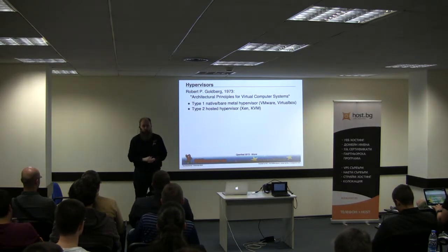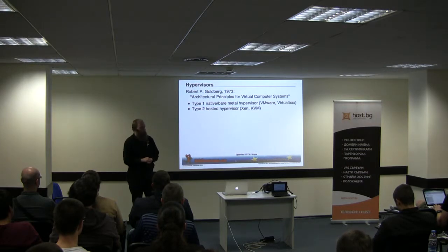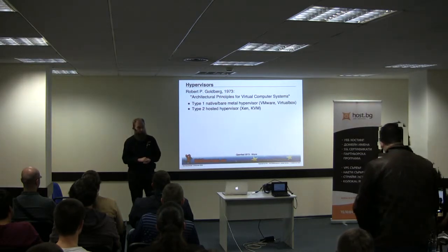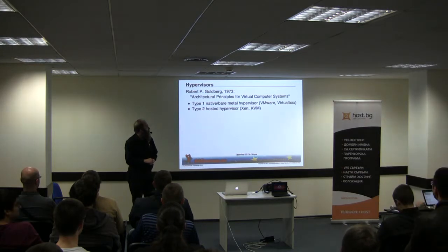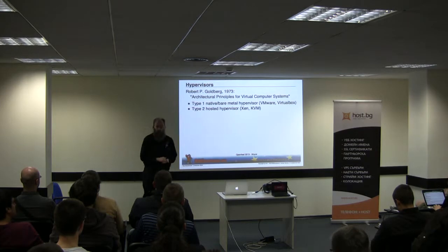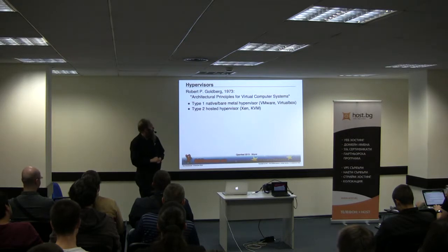The type two hypervisor is a little bit different. It expects that the guest operating system knows that it is running under a hypervisor and does not talk to the hardware directly. Hypervisors that use this model are, for instance, Xen and KVM. The reason we want to use type two hypervisors is because of the performance.